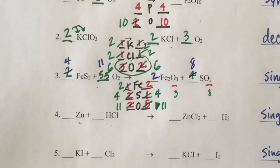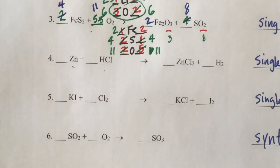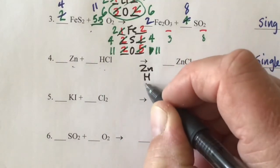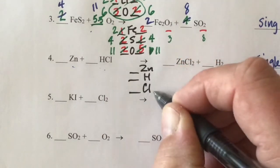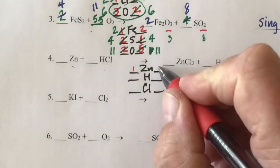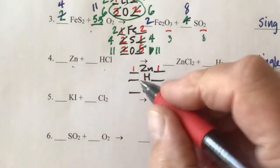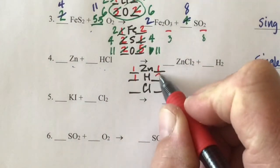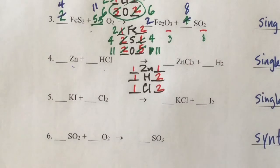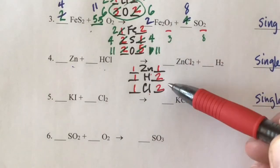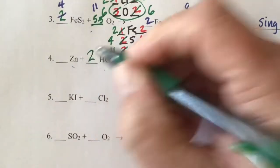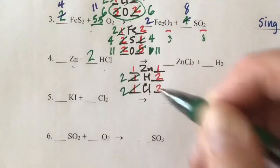Here's an easy one — number four. We list zinc, hydrogen, and chlorine. One zinc on each side — that looks good. One hydrogen in the reactants, two in the products — not balanced. One chloride in the reactants, two in the products. We need two hydrogens and two chlorides on the reactant side, so put a 2 in front of HCl. That changes hydrogen to two and chlorine to two, and it is balanced.